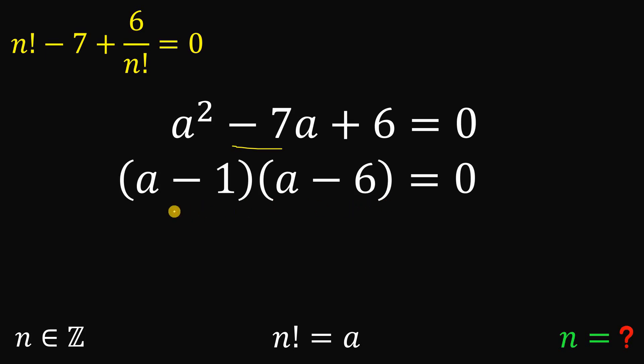Using the zero property, at least one of them must be equal to 0. So we can say that a minus 1 equals 0 or a minus 6 equals 0. On the first equation, if we add 1 on both sides, we get a equals 1. And on the second equation, if we add 6 on both sides, we get a equals 6.